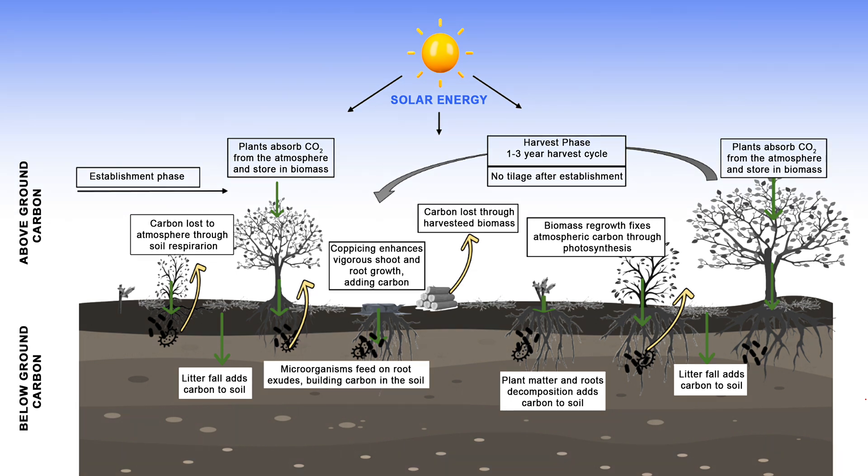Biomass crops have high above ground and below ground biomass which store significant amounts of carbon in the plant. Biomass crops are harvested every one to three years during the lifetime of the crop.